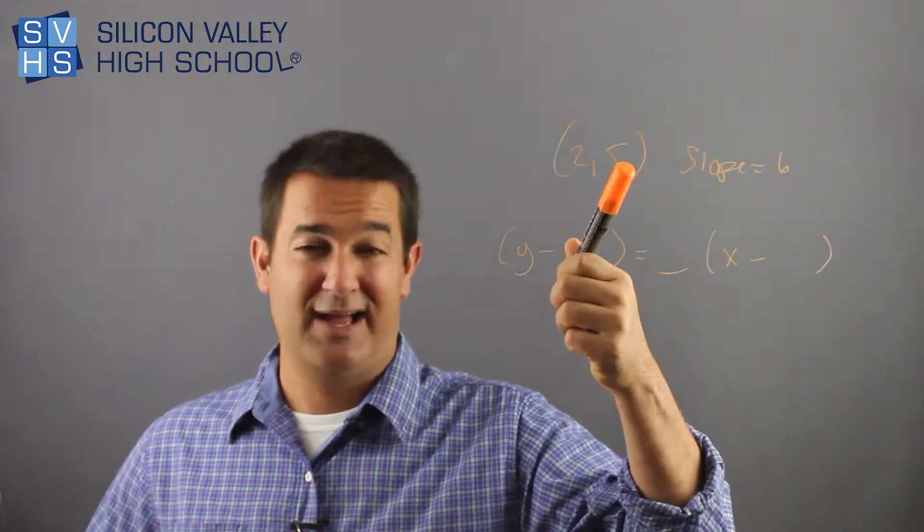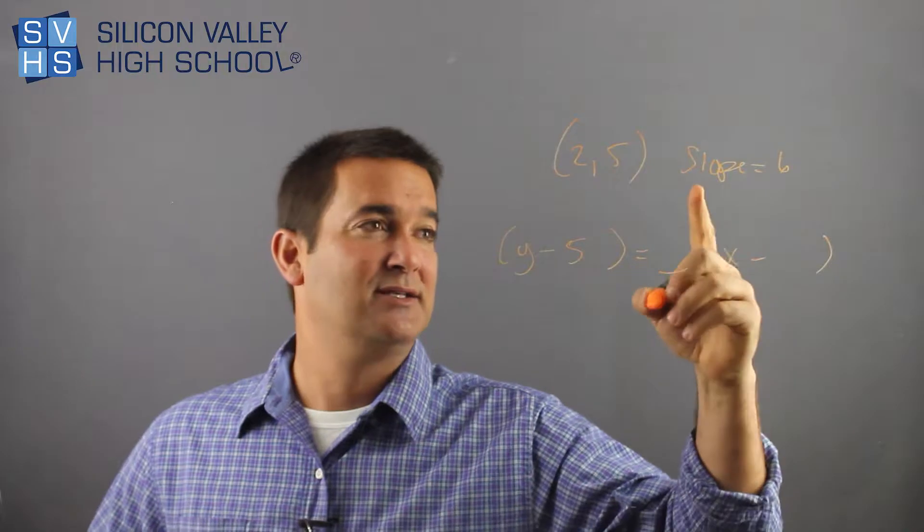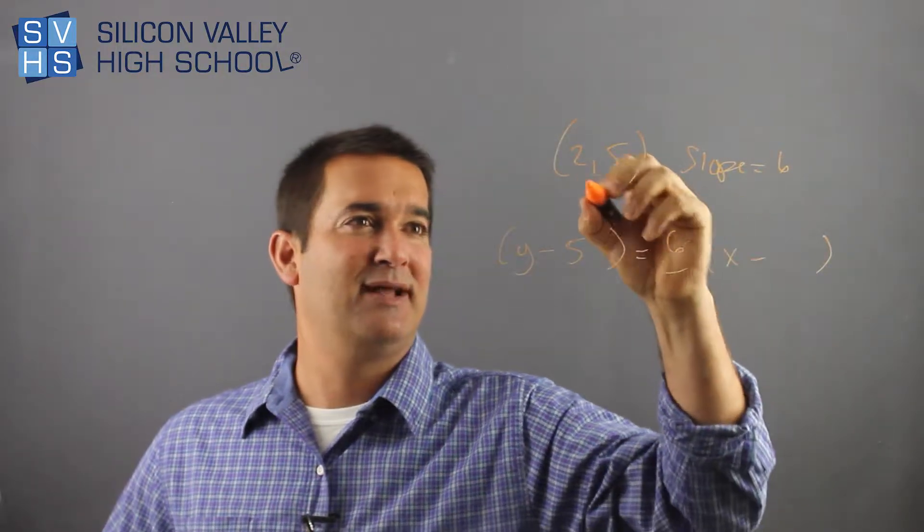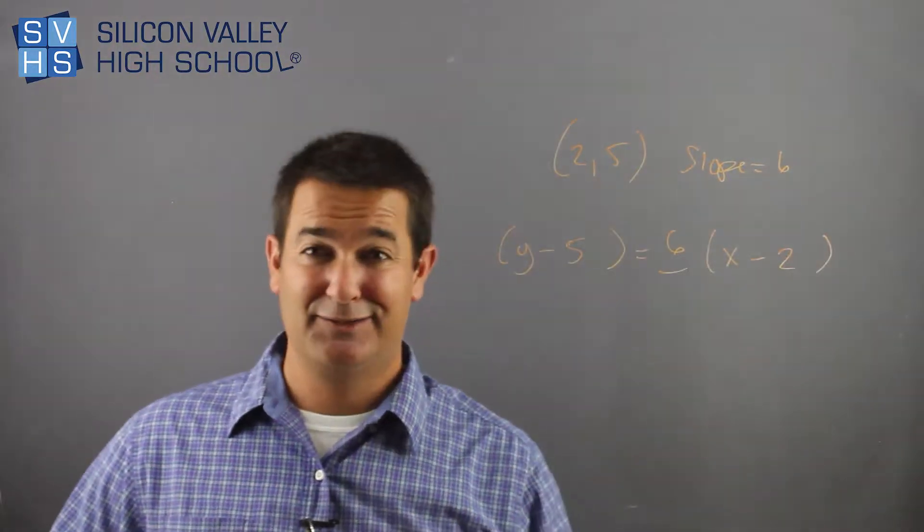And in this case, you put in the Y. So Y minus the Y guy, which is 5. The slope was 6. And then X minus the X value, which is 2. Literally, it's that easy.